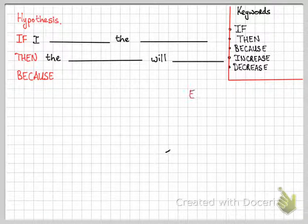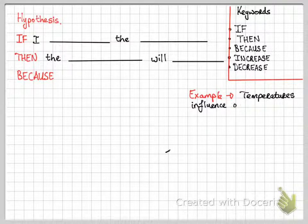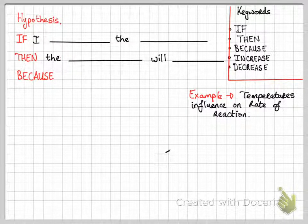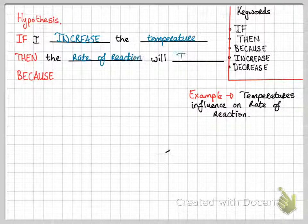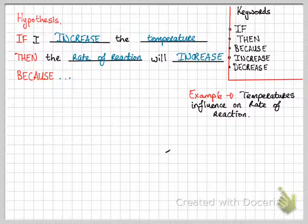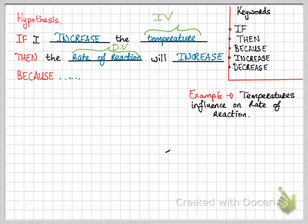And I'm going to again relate this to the example of temperature's influence on rate reaction. So if I increase the temperature, then the rate of reaction will increase because. You can see that I have included an independent and dependent variable into my hypothesis.